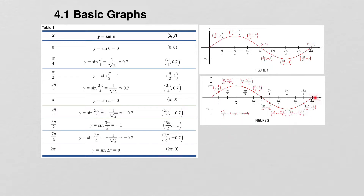This other graph shows some of the other angles not listed in the table, such as pi over 6, pi over 3, 2 pi over 3, etc. And you can see you get the same graph.